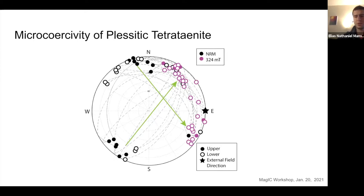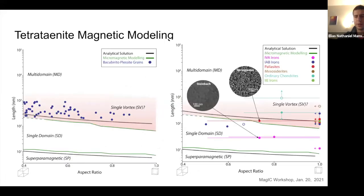While these grains have a large coercivity and are not easily remagnetized, we must also address what magnetization state they're in and whether that state can hold a remanence for a long time. To answer this, we used Merrill micromagnetic modeling to create a Butler-Banerjee diagram for tetraenite, which defines the magnetic domain ranges based on grain length and axial ratio. Our magnetic modeling, shown in green, gives a slightly different solution than the analytical solution in black, and we see that our Bocuribito plessite grains are probably above single domain, but likely in a single vortex state.